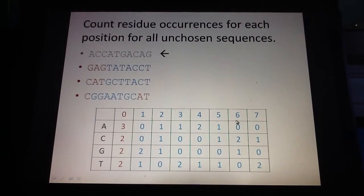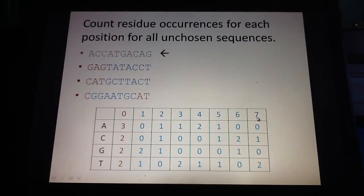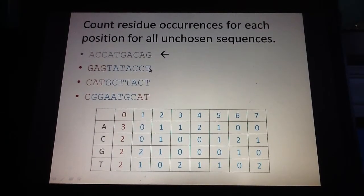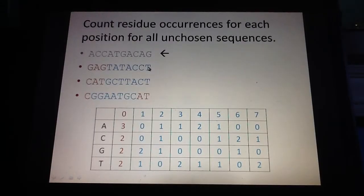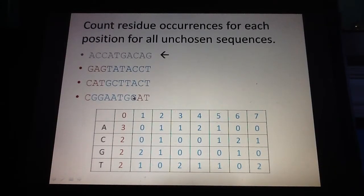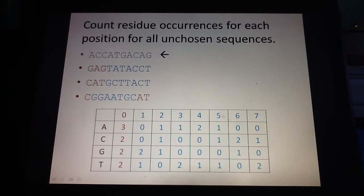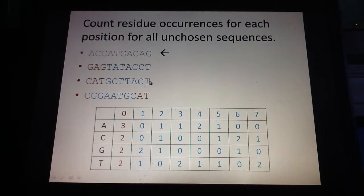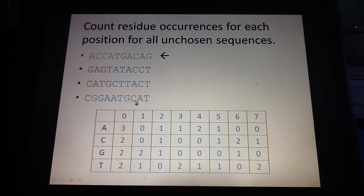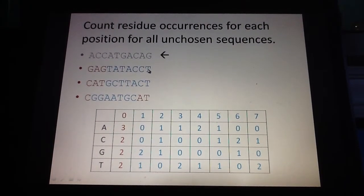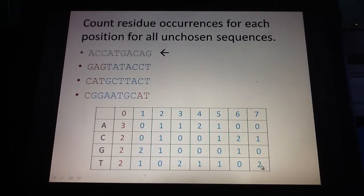For position seven, we look at position seven in each of the unchosen sequences and count the number of A's in the seventh position. None of them have an A in the seventh position, so we have a zero. Then we count the number of C's in the seventh position — we have one C there, so a one. The number of G's is zero, and the number of T's is actually two in the seventh position, so we have a two over there.